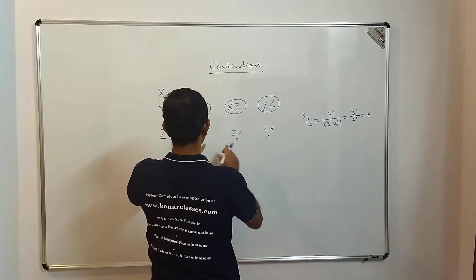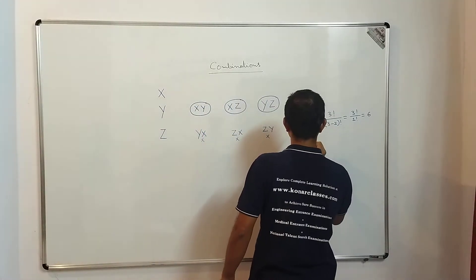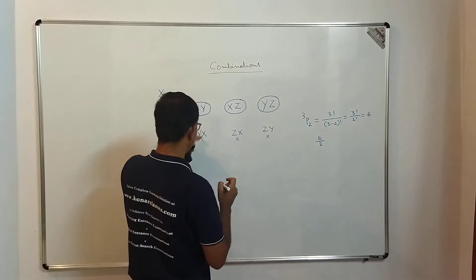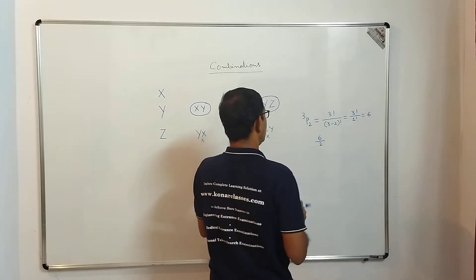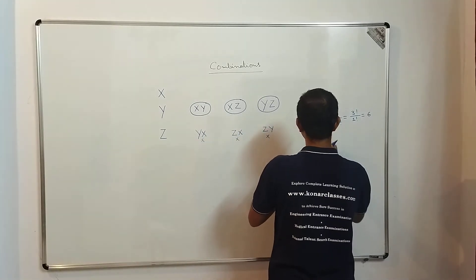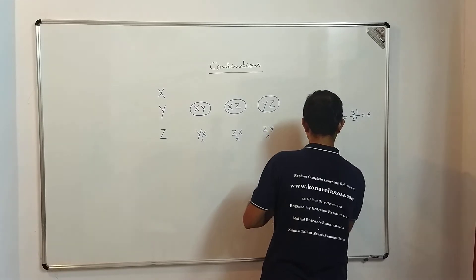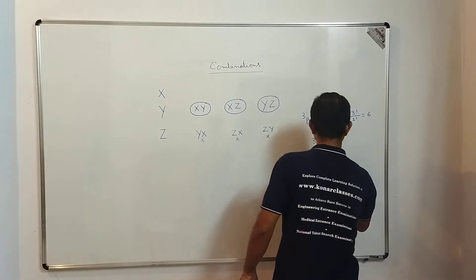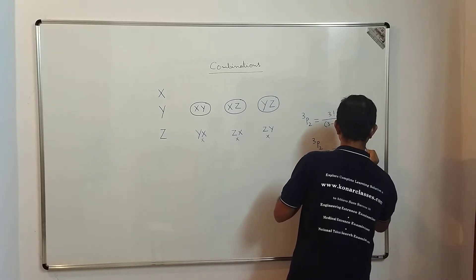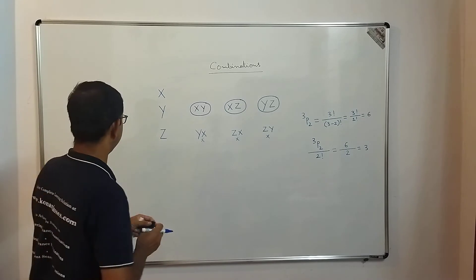The possible number of selections we get is three. How do we get this three? We divide six by two, because each pair of arrangements represents the same selection. We can write this as 3P2 divided by 2!. Since 3P2 = 6 and 2! = 2, we get 6/2 = 3. This gives us the possible number of selections.